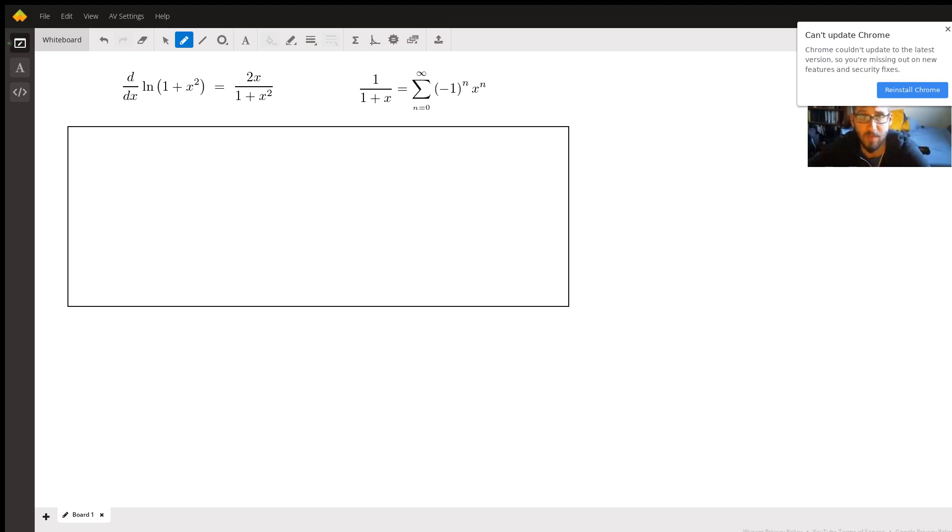Now, a really good trick with a lot of power series is trying to see if you can use some common power series in the context of wherever your problem is. And if we look at what we got as our derivative, this is very similar to another common power series. And that's the one I've written over here. So 1 over 1 plus x is the alternating infinite series that I have here.